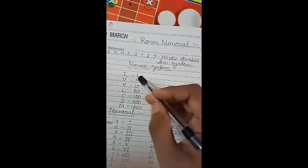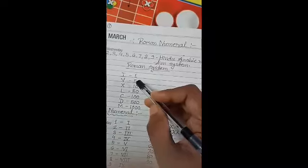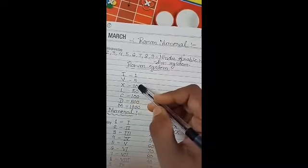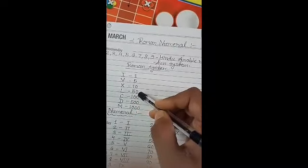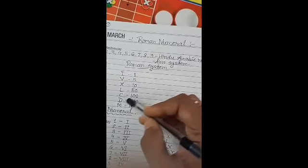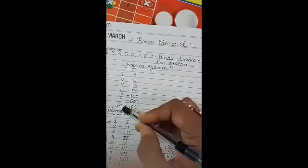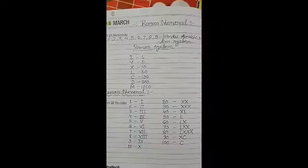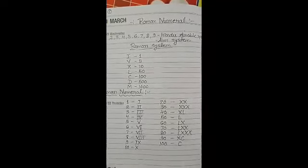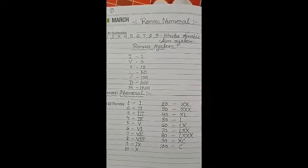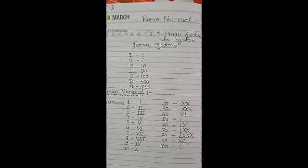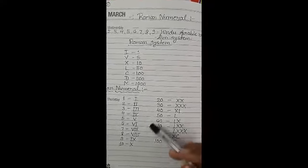I is 1, V is 5, X is 10, L is 50, C is 100, D is 500 and M is 1000. Before converting any Roman numeral to numeral, we have to remember all these values.